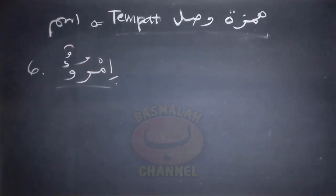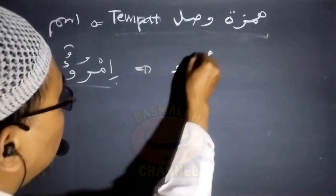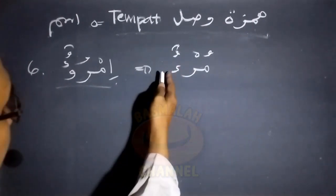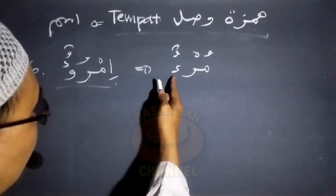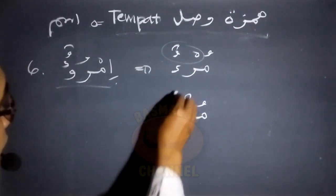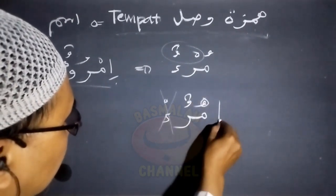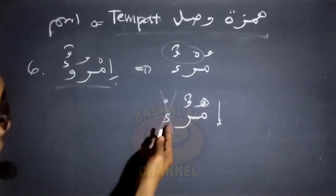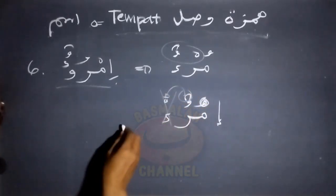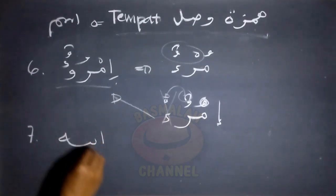Yang keenam adalah hamzah yang ada pada lafad 'imru'un', maknanya adalah seseorang. Lafad imru'un ini pada asalnya adalah lafad 'mur'un'. Prosesnya: harkat dari hamzah yang ada pada posisi lam fi'il ditukar dengan harkat dari huruf ro', sehingga menjadi mur'un. Selanjutnya hamzahnya dibuang dan huruf mim disukunkan, kemudian ditambah hamzah wasol, lalu hamzah yang dibuang dimunculkan kembali beserta tanwinnya, sehingga jadilah lafad imru'un.